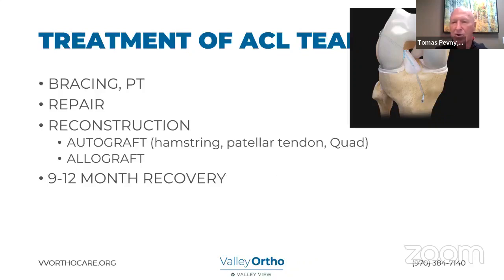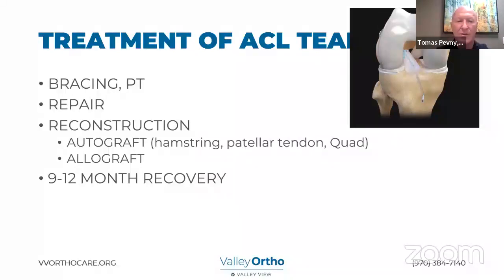In reconstruction, you take out the torn ACL and put in other tissue. The two main categories are autografts — your own tissue — and allografts — cadaver tissue. For autografts, the three main tissues we can use are the hamstring, patellar tendon, and quad. I prefer the quad tendon because it's strong, doesn't have the harvest site morbidity of a patellar tendon, and doesn't stretch out as much as a hamstring tendon. For people over 40 who are less active, we would use cadaver tissue — an allograft. Cadaver tissue these days is very safe with no difference in infection rate.